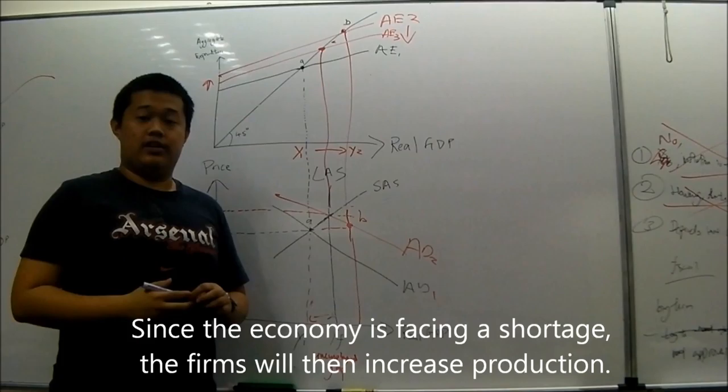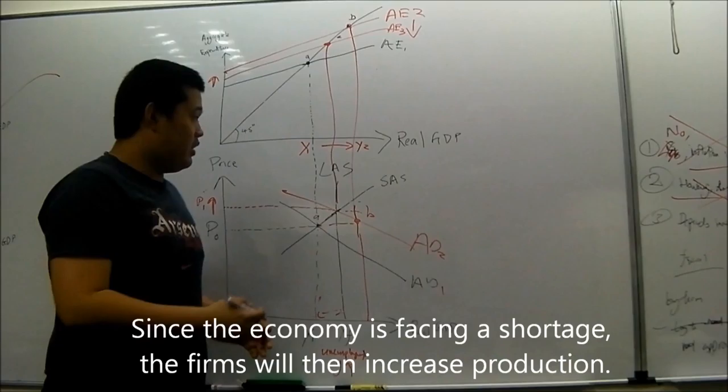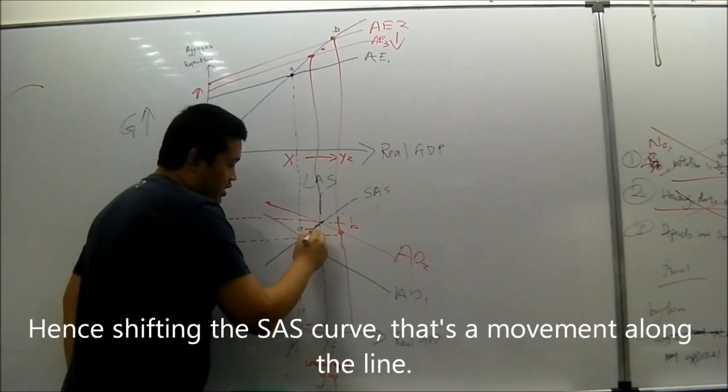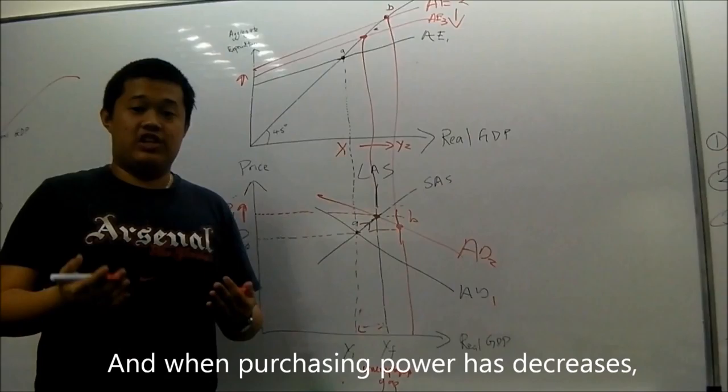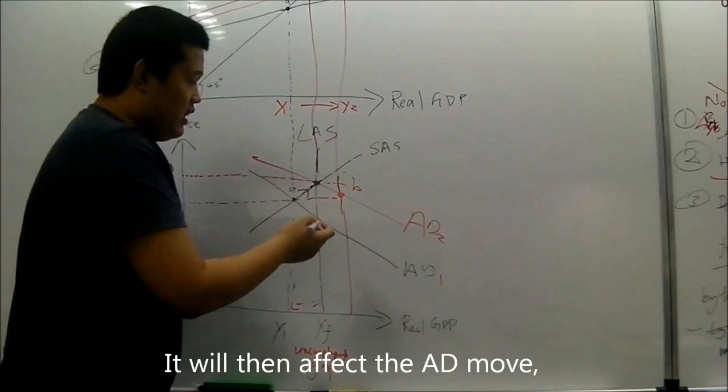Hence the consumer purchasing power decreases, therefore shifting AE2 down to AE3. Since the economy is facing a shortage, the firms will then increase production, hence shifting the SRAS curve. There is a movement to the right.